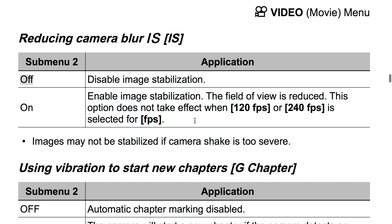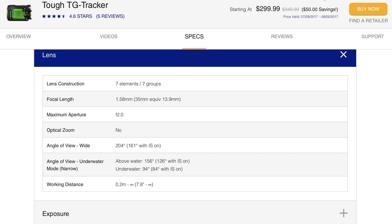To get rid of the fish-eye look, keep in mind the field of view is reduced. This option does not take effect when you're using 120 frames per second or 240 frames per second. So if you're running those high frame rates, you're going to be back at 204 degrees.